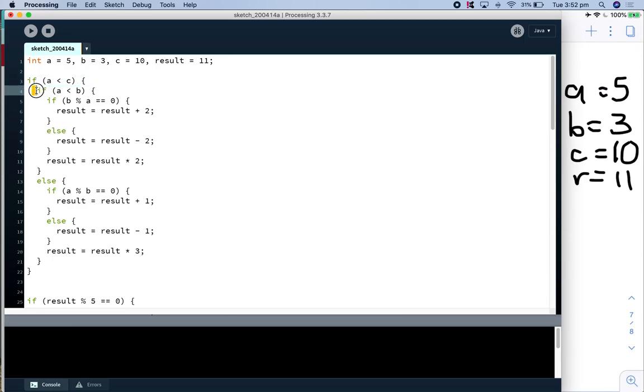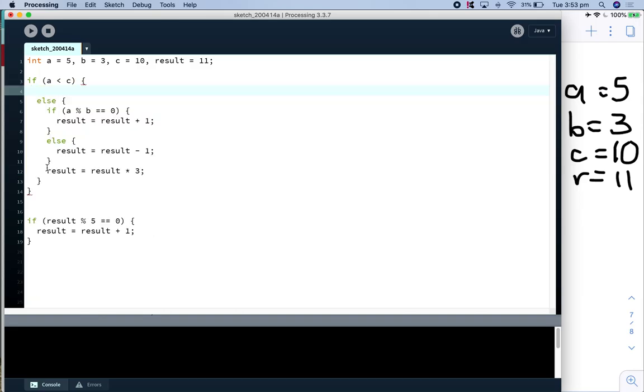So we've entered this if, we're going to go into this one here. So if a is less than b, 5 is less than 3, well that's false, which means we aren't going to go into this if condition, we're going to be going into the else. So I'm just going to remove that one there.